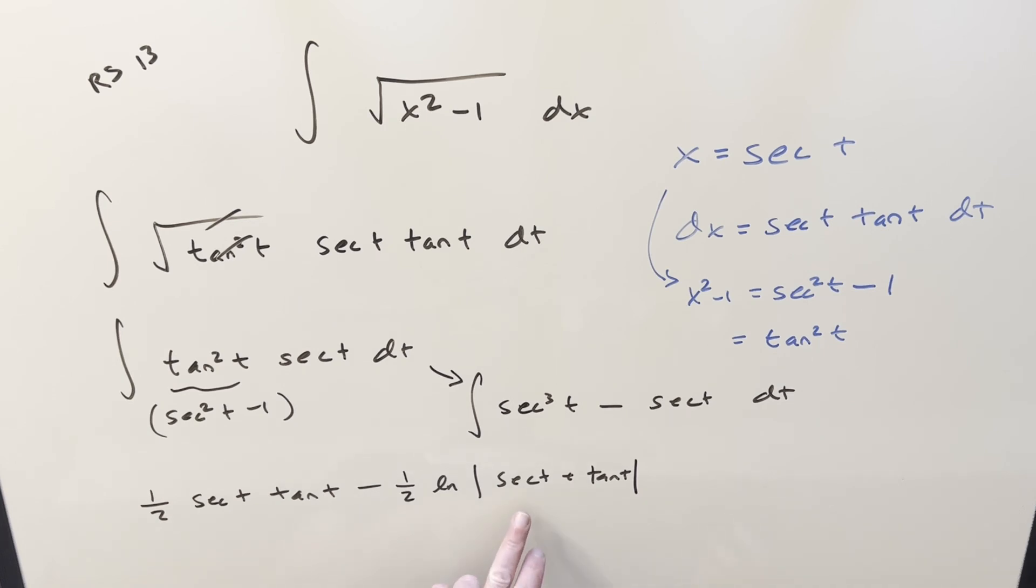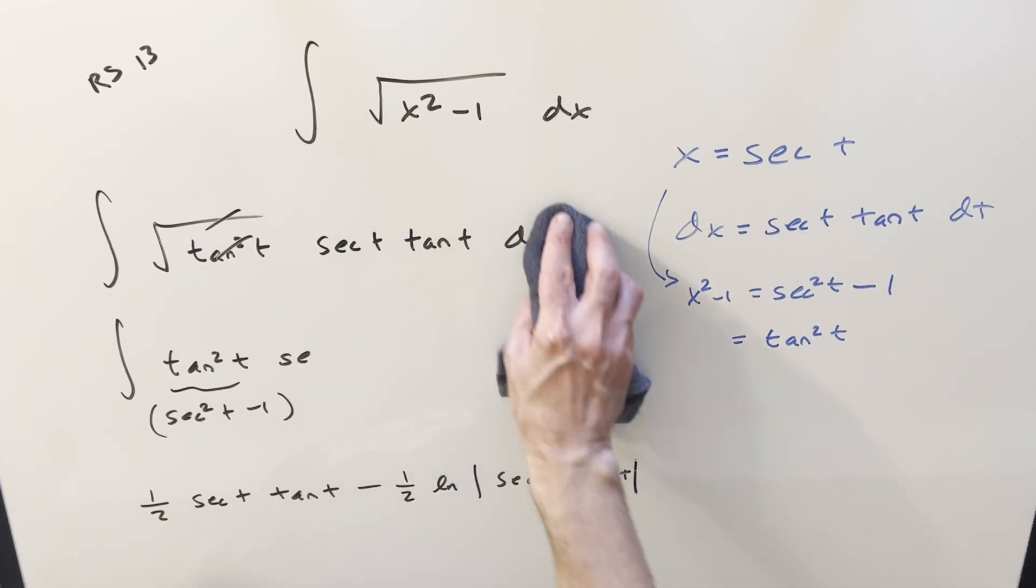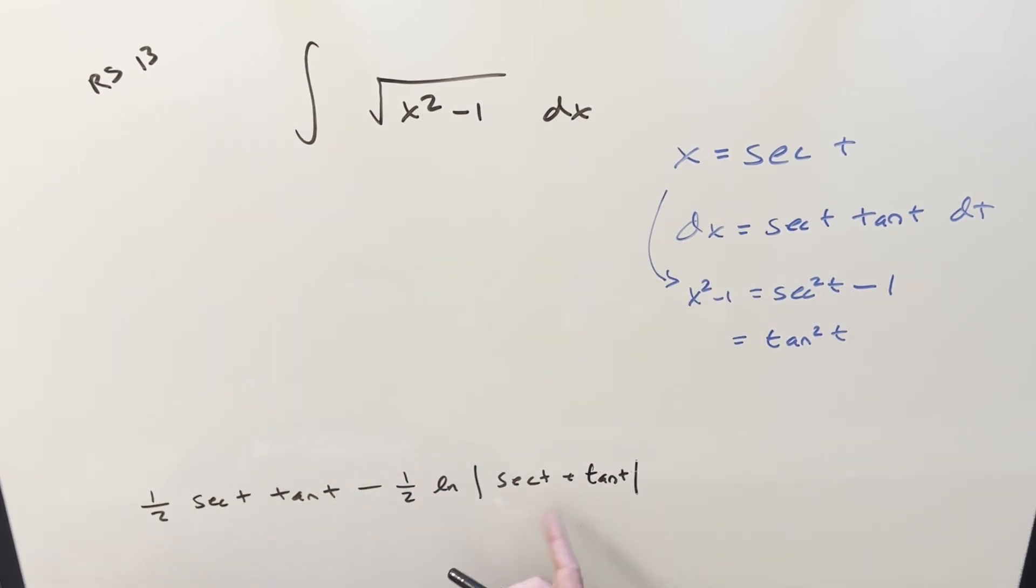Now we're almost done, but I just need to back substitute to finish it off. Let me make a little space here. For the secant t, we already have that value. It's going to be x. And now for the tan t value, let's just do it. Instead of drawing the triangle, it really doesn't matter, but let's do it this way instead.